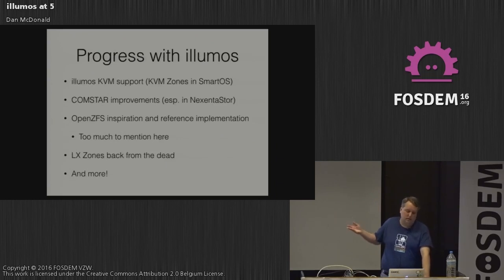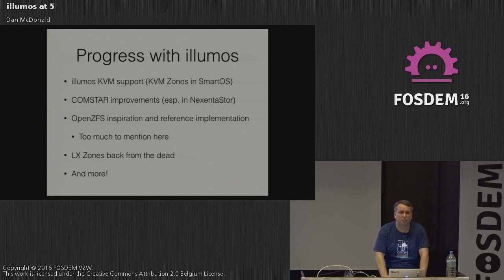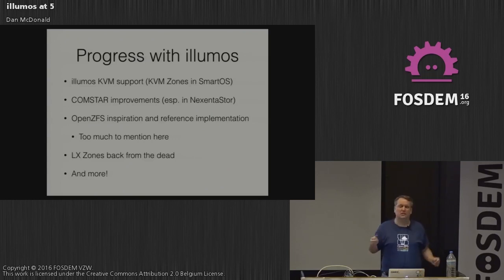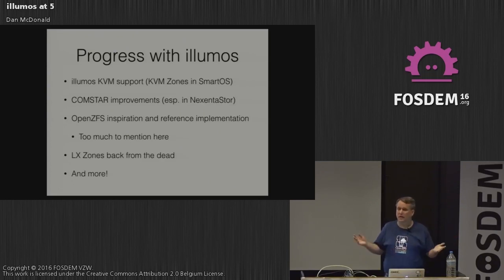Moving forward with Illumos: we've gotten KVM support in so you can run hardware virtual machines. We've improved Comstar — the Common SCSI Target — for iSCSI and SCSI over Fibre Channel; Nexenta Store has done recent changes there and we hope to see those upstream soon. OpenZFS is now its own entity, still downstream from Illumos gate — which remains the reference implementation — but ZFS now works on every OS: there's ZFS on Linux, ZFS is integrated into FreeBSD, and you can place it into your OS of choice if it's not there already.